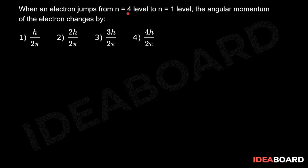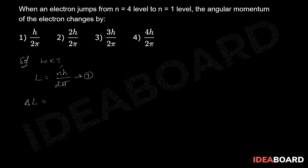When an electron jumps from n=4 level to n=1 level, the angular momentum of that electron changes. We know that the angular momentum of the electron revolving around the nucleus is quantized, that is, angular momentum L = nh/2π. Here we have to calculate the change in angular momentum when the electron jumps from n=4 level to n=1 level.